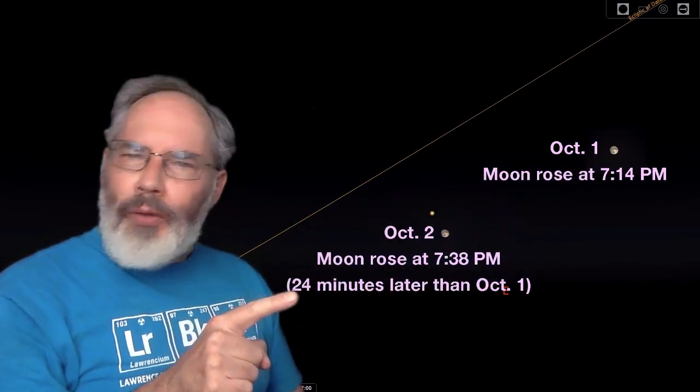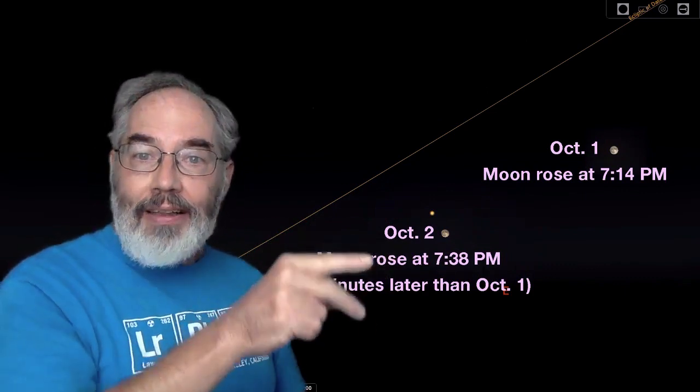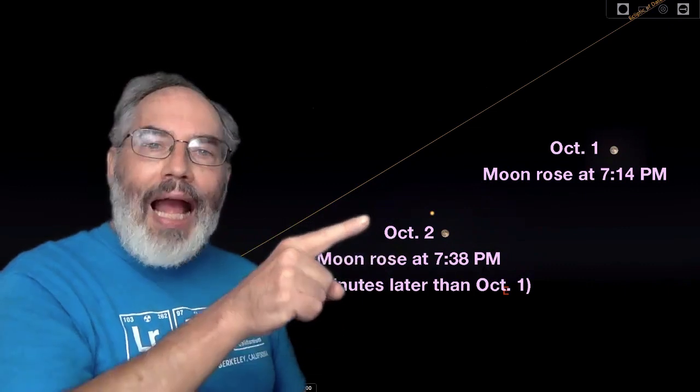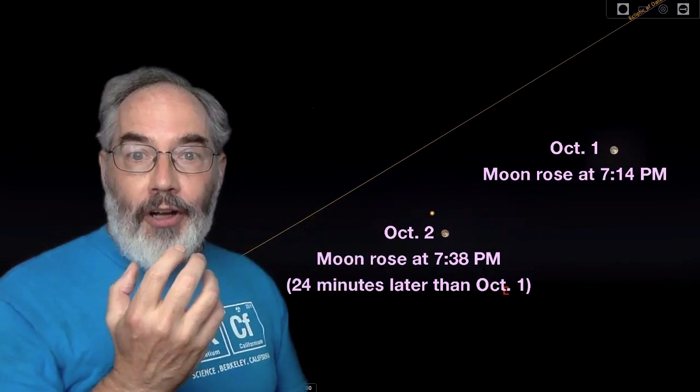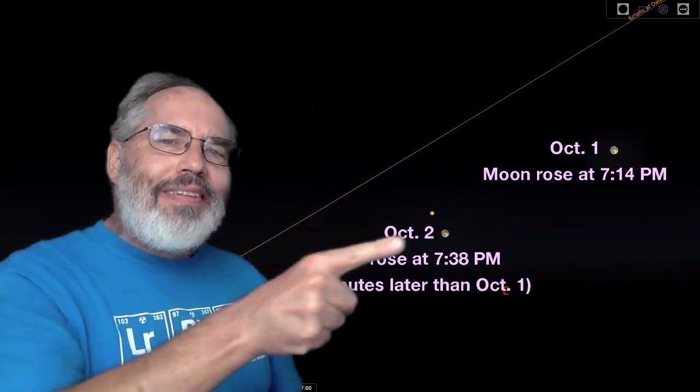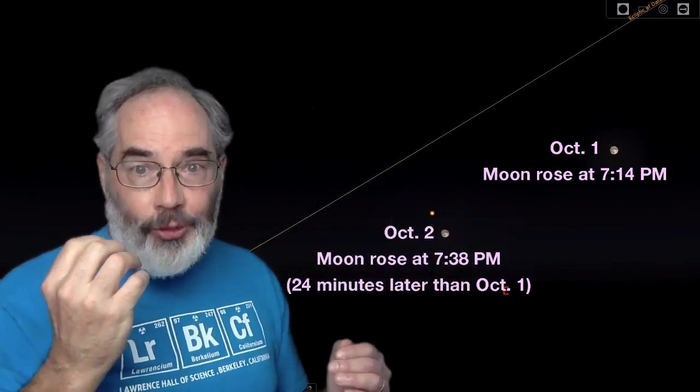Which means you don't have to wait too long after sunset before the moon rises on the day after the full moon, and its light again gives you light for your harvest. So I'm going to say that the moon any time around the time of full moon could be called a harvest moon.